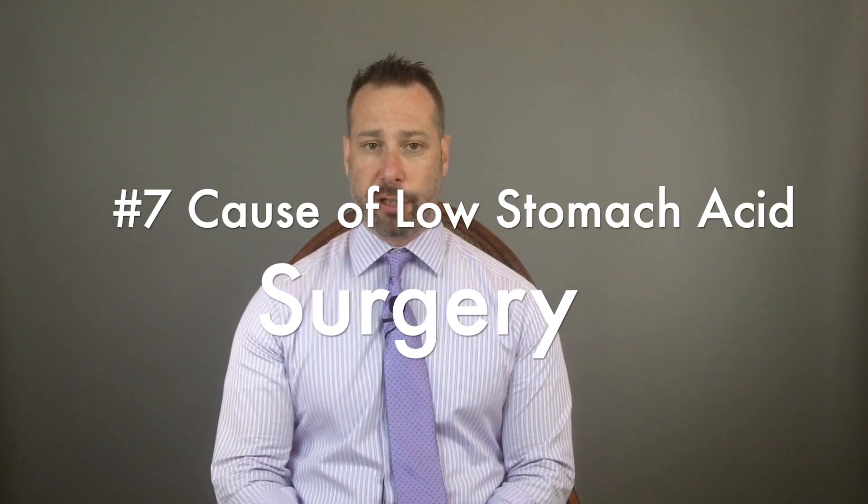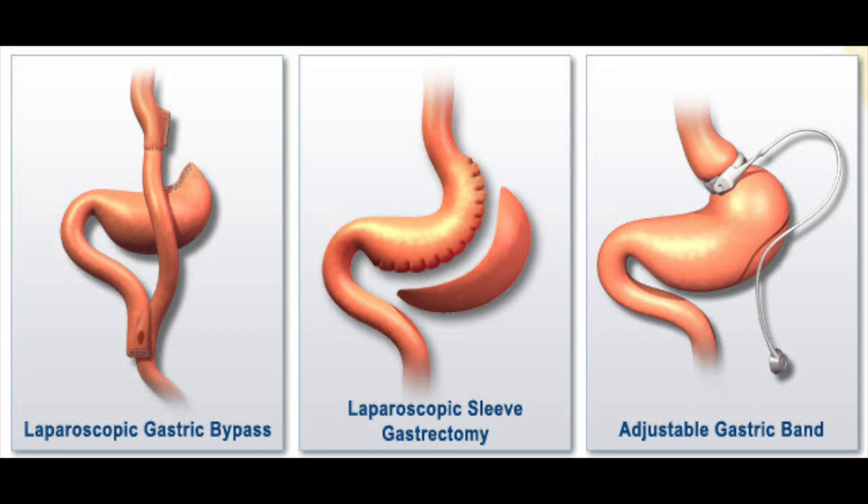Number seven is surgery. Gastric bypass surgery is very common in the United States, and patients often undergo it due to struggles with weight. As a consequence of that surgery, there is damage to the intestinal cells and the intestines, whether by removing organs or other means. The result is decreased stomach acid production, leaving you in a hypochlorhydric — or low stomach acid — state.